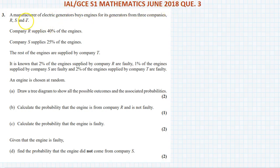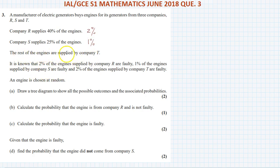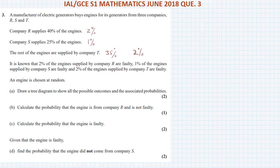IEL question number 3 for June 2018: a manufacturer of electric generators buys engines from three companies. Company R supplies 40% of the engines and 2% of those are faulty. Company S supplies 25% of engines and 1% are faulty. The rest are supplied by company T, which is 35%, and 2% are faulty. An engine is chosen at random. Part A: draw a tree diagram to show all possible outcomes and the associated probabilities.